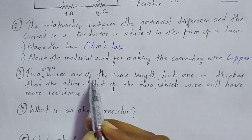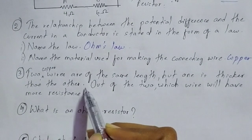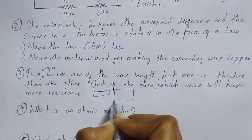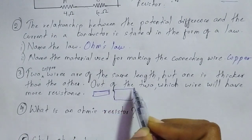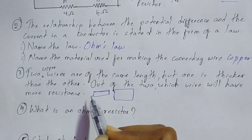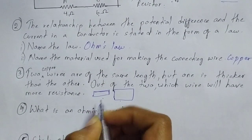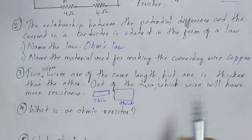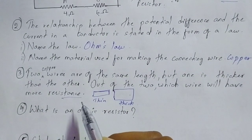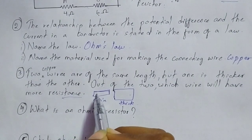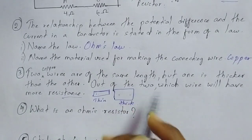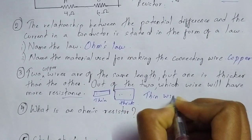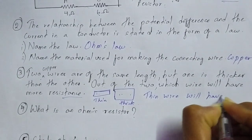Question 3: Two copper wires are of the same length, but one is thicker than the other. The length is the same but one is thin and the other is thicker. Which wire will have more resistance? Resistance is the obstruction offered to the flow of current. If the wire is thin, there is more obstruction, but if the wire is thicker, resistance is less. So the thin wire will have more resistance.